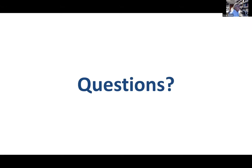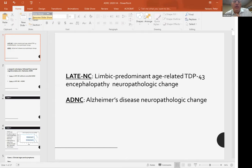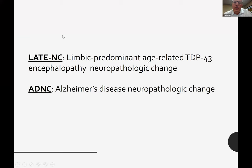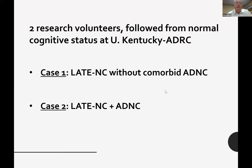We'll move on. This next talk is going to be about LATE — limbic predominant age-related TDP-43 encephalopathy. The LATE-NC designation discusses the neuropathologic change rather than the disease itself, following the convention of Alzheimer's disease neuropathologic change. I'm going to discuss results for two research volunteers followed from normal cognitive status at the University of Kentucky. Spoiler alert: the first one is LATE without comorbid ADNC and the second is LATE-NC with comorbid ADNC.